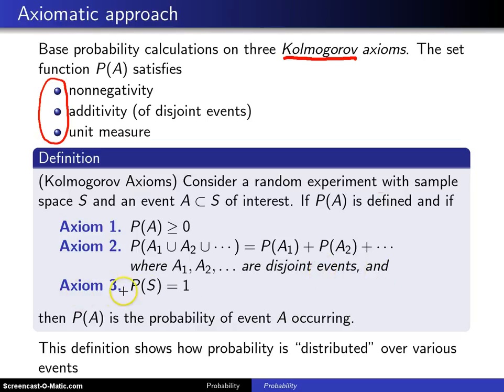And finally, third is that the probability of any event in the sample space occurring is equal to 1.